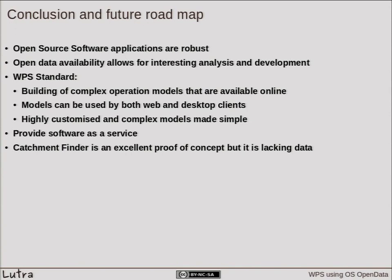Without open data we wouldn't have been able to make this proof of concept. It's not just that the data is free to get — you can also provide services with it. The only problem, as you saw with the first catchment, is that the spatial resolution isn't very high. In flatter areas it's difficult to get a good catchment calculation. It would be nice to have higher resolution data for a more accurate service, but that depends on the underlying data.